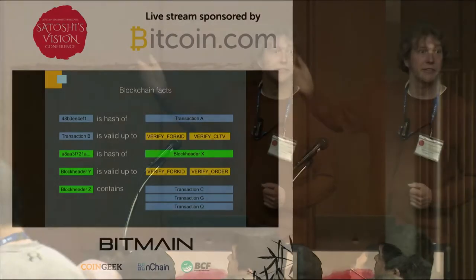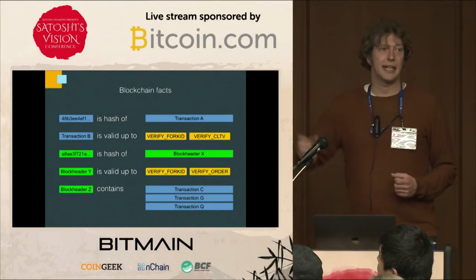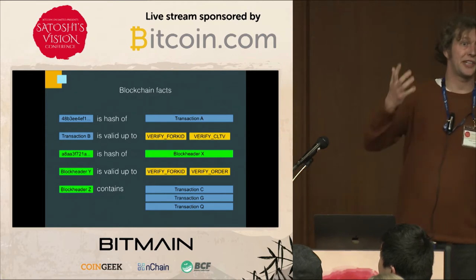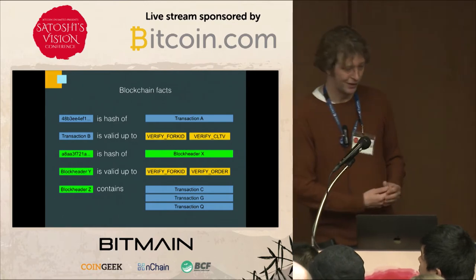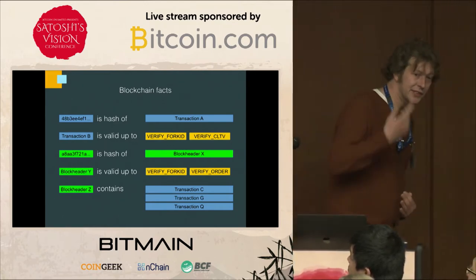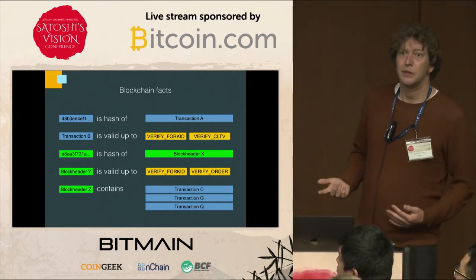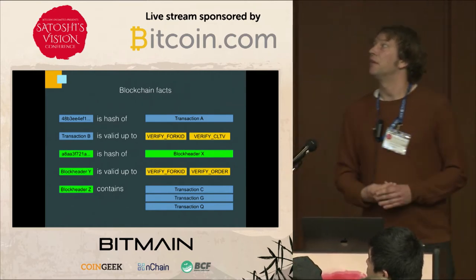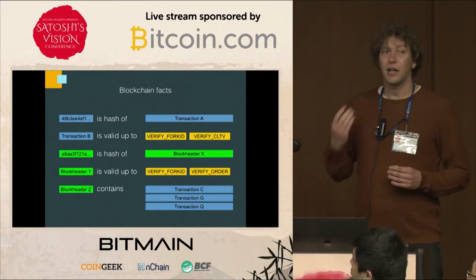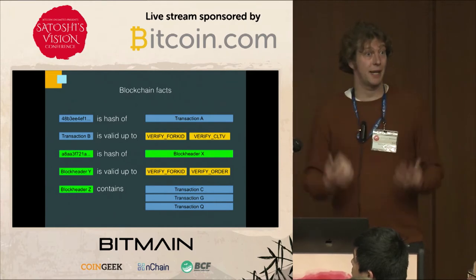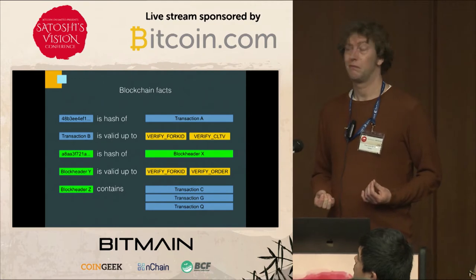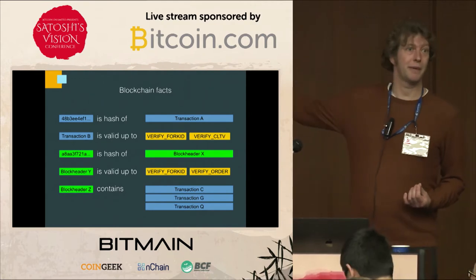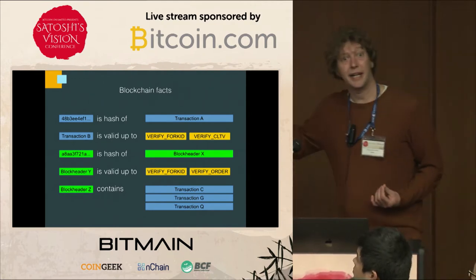We have some blockchain facts: this hash is the hash of this transaction, this transaction is valid up to a certain rule set, this hash is the hash of a block header, etc. The interesting thing about all these facts is that they have something in common: once they are established, they're all immutable and undisputable. They may at some point no longer be interesting for the software, but they can never change.